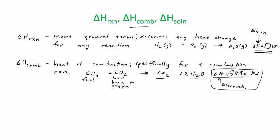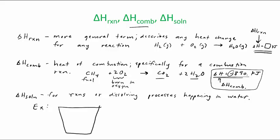Now heat of solution is delta H soln, this one is, these are for reactions or dissolving processes happening in water. So for example, if you have a precipitation, in an aqueous environment. So look for, a good way to tell is look for parentheses AQ for the physical states on a reaction. So for example, if you have AG plus and Cl minus, so these are going to form a precipitate.